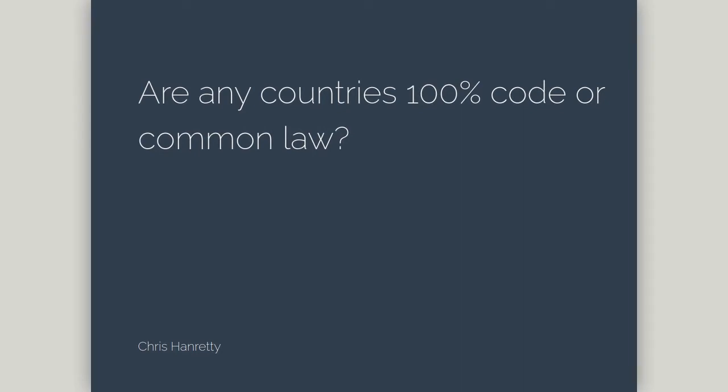Common law and code law systems are two important ways of organising the law of a country. It's useful to know whether a country is regularly described as a common law system or as a code law system. But when we describe systems in this way, we're simplifying. Here are four ways that a system might fail to be completely common law or completely code law.